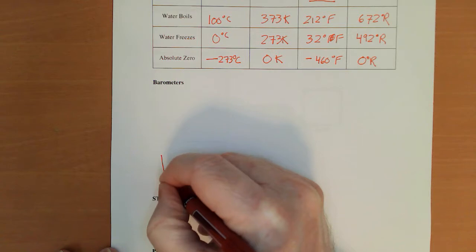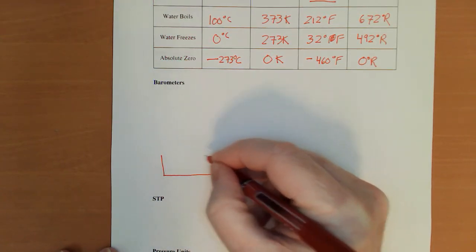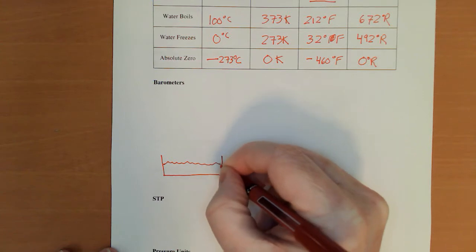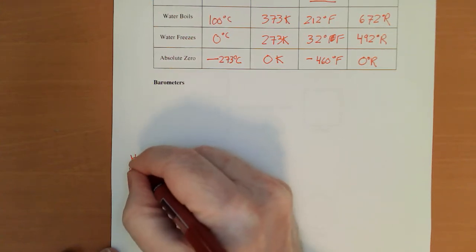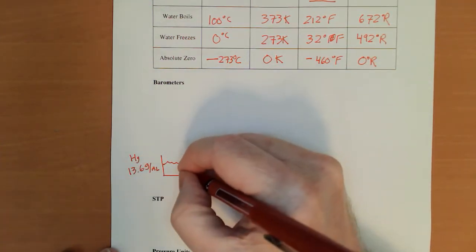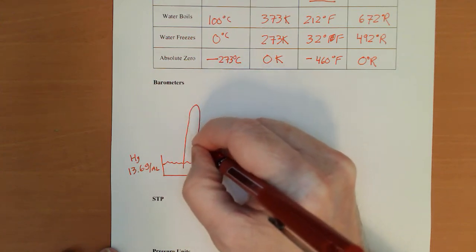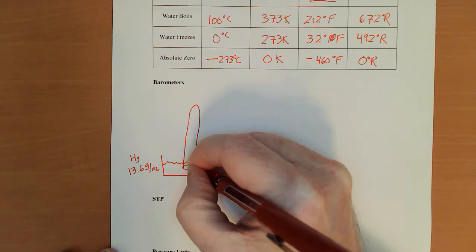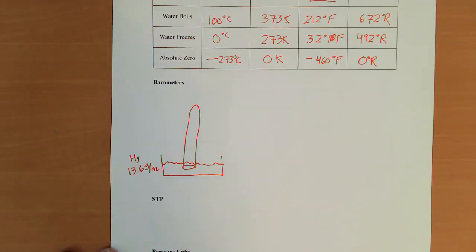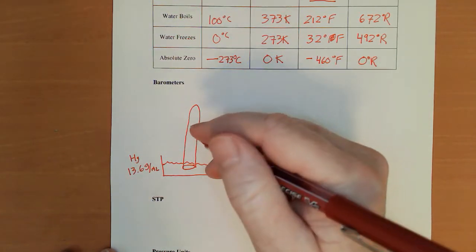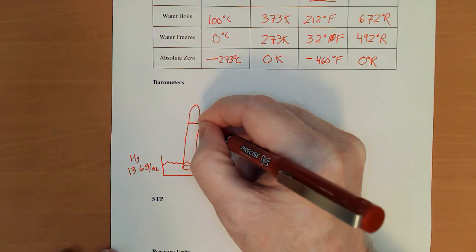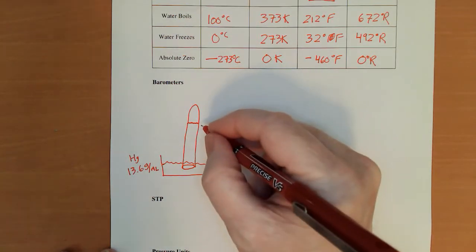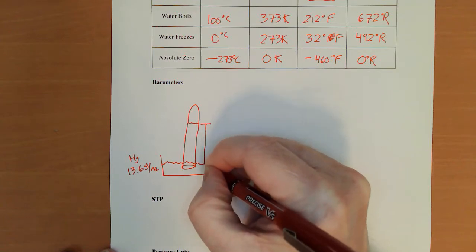We have a tub down here of liquid mercury because of its very high density, about 13.6 grams per milliliter for that mercury. We inverted that very long test tube, almost a meter. What did she say? It was like 850 centimeters, I think. It was full of mercury. The mercury dropped a little bit, came down, something about that level.